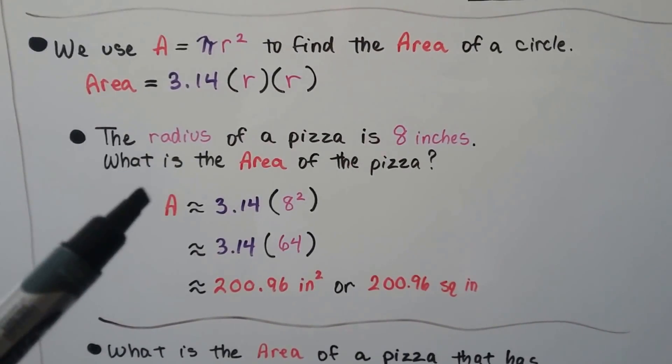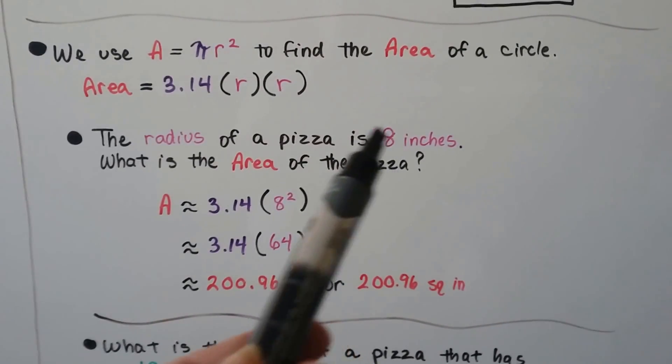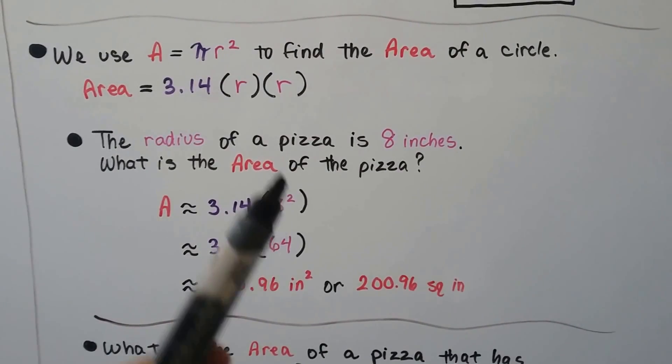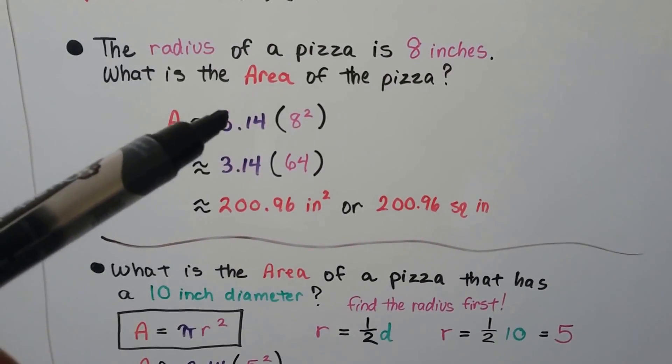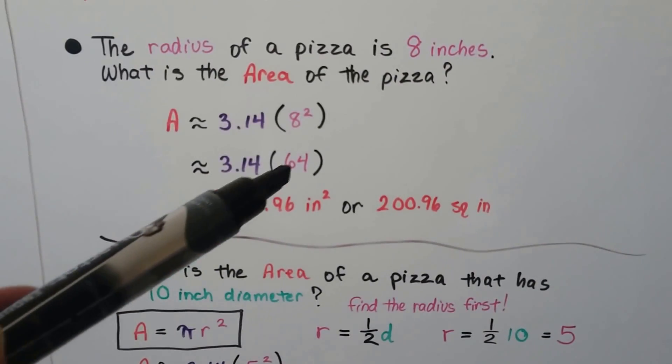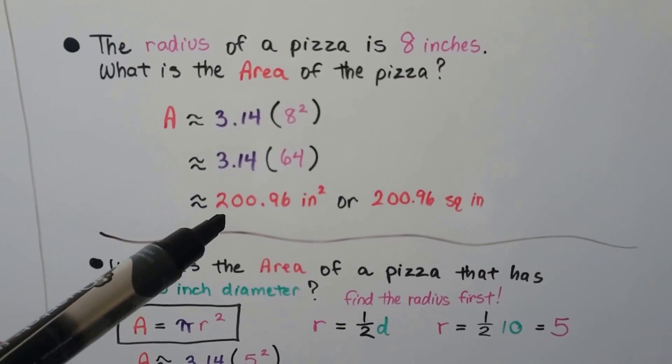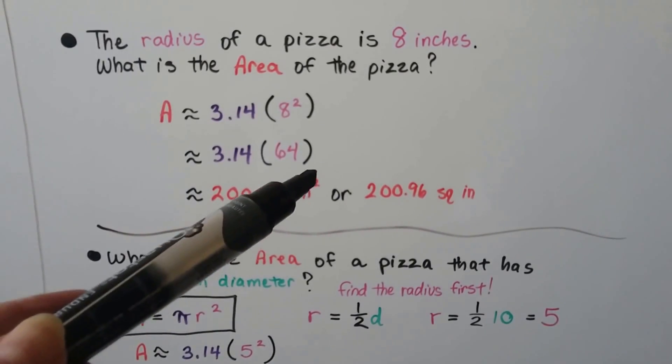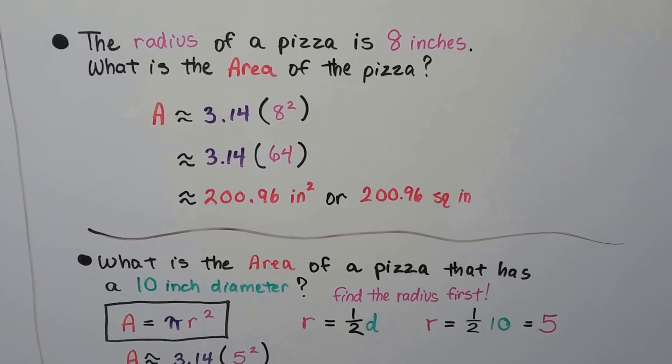So if the radius of a pizza is 8 inches, what's the area? Well, the radius is 8. We're going to do 8 times 8, 8 squared, to do the r squared. So the area is approximately 3.14 times 8 squared, which is 64. We do 3.14 times 64, and we get approximately 200.96 inches squared, with a little 2 exponent, or you could say square inches. Either way is correct.